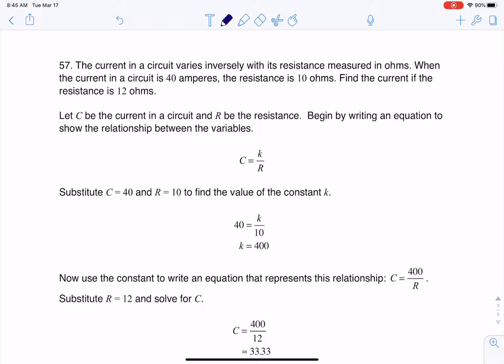Hey, Matt31, I had a question coming out of section 5.8, number 57. Here we were told a circuit varies inversely with its resistance. When the circuit is 40 amps, the resistance is 10 ohms. Find the current if the resistance is 12 ohms.